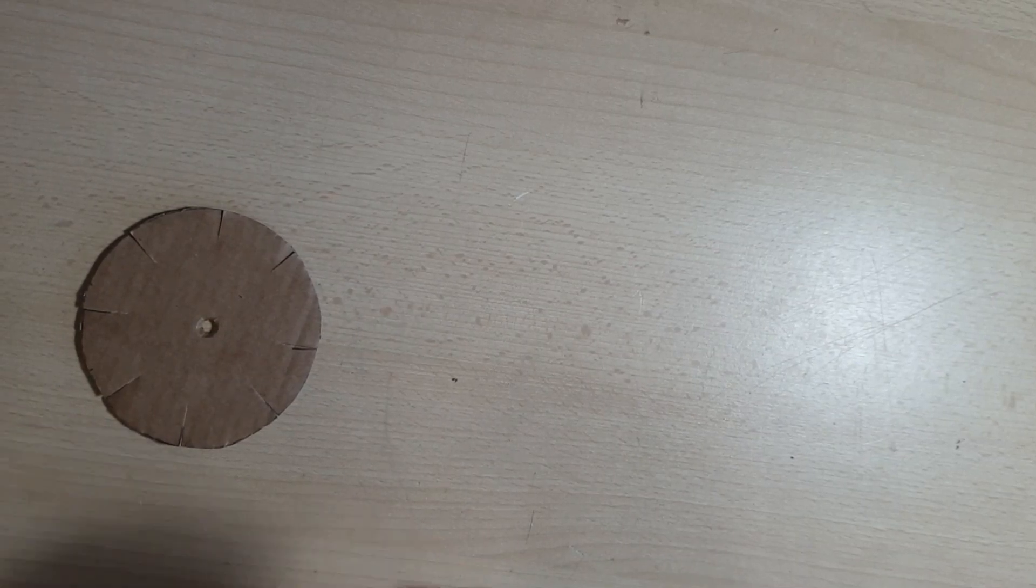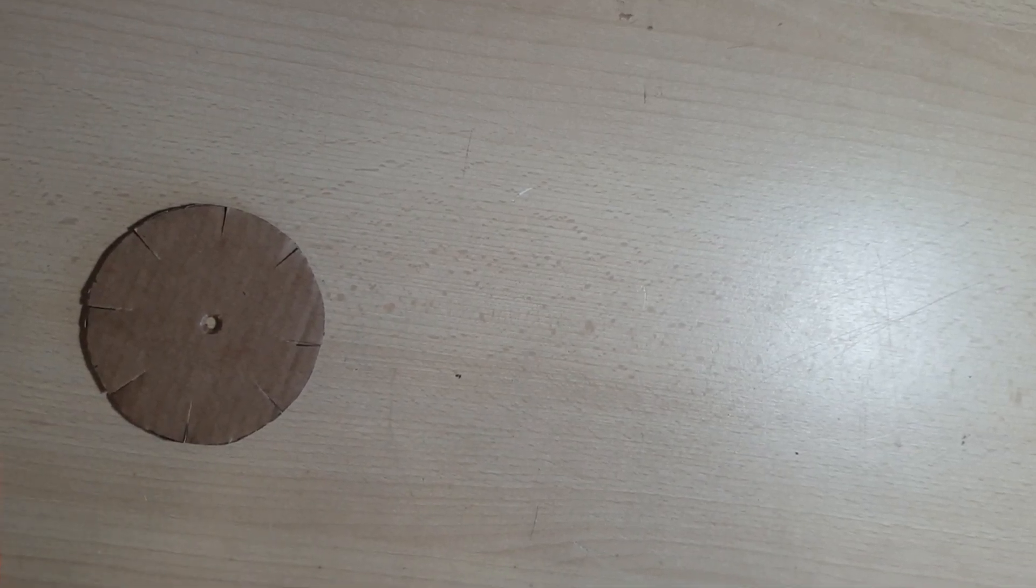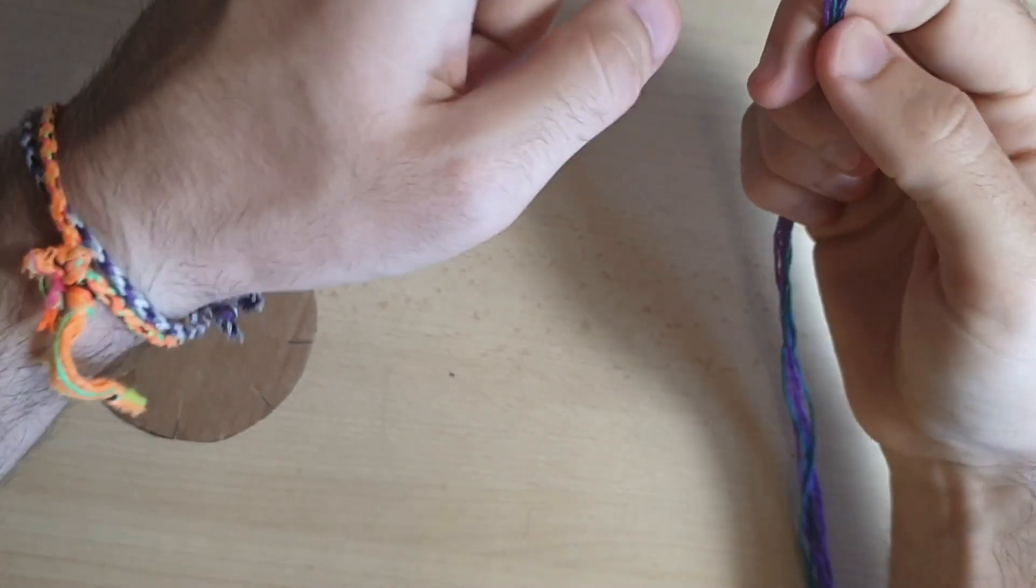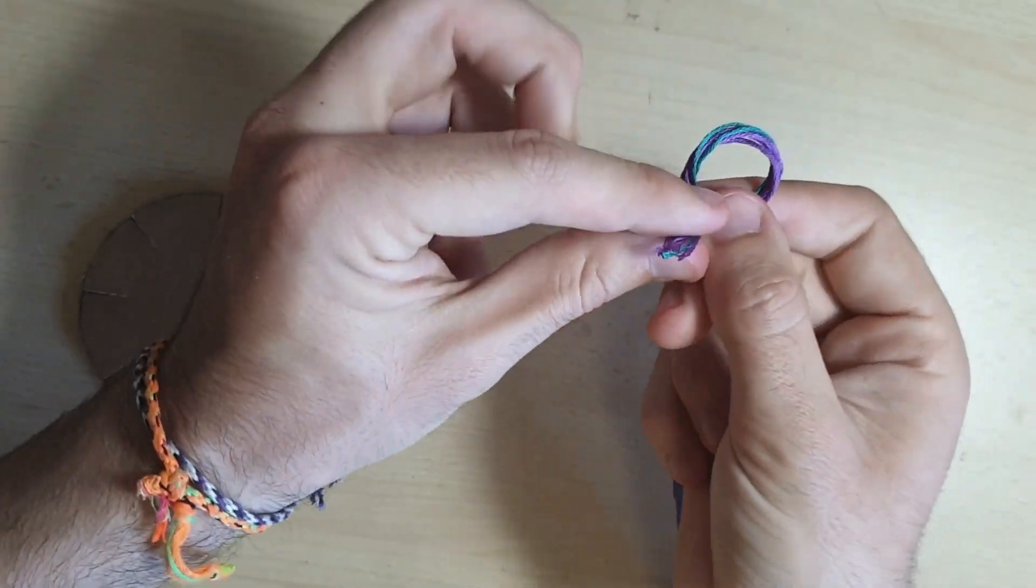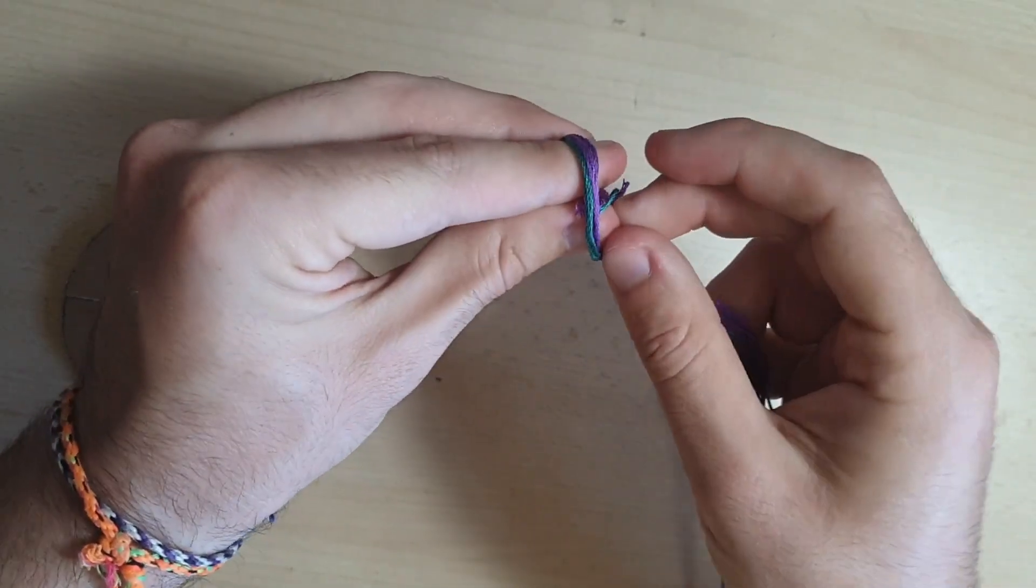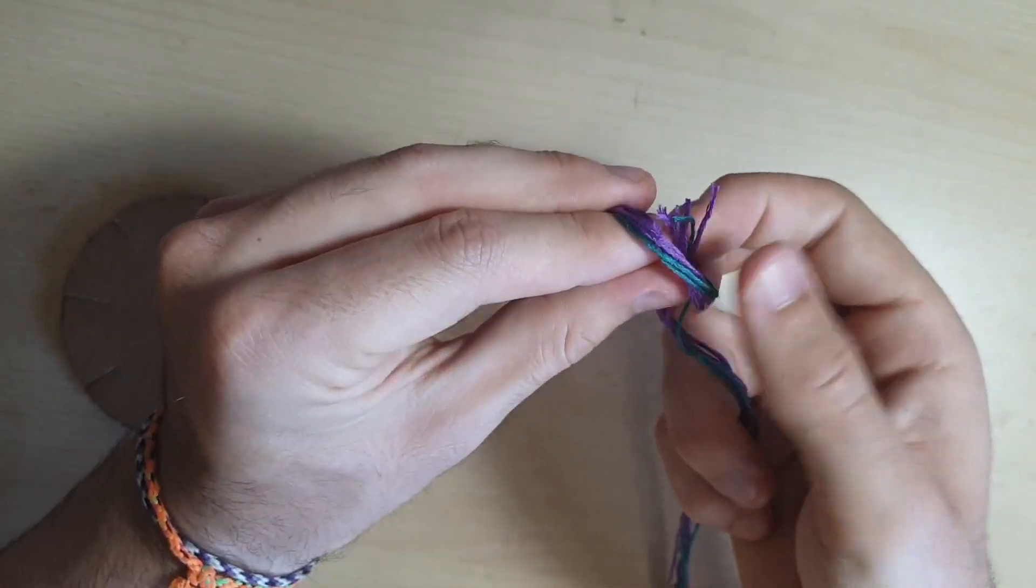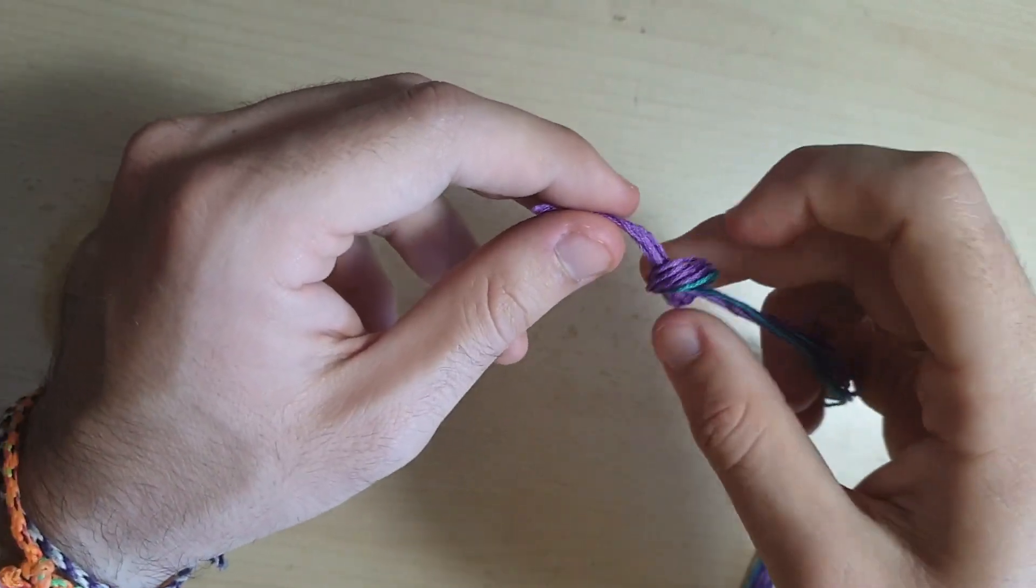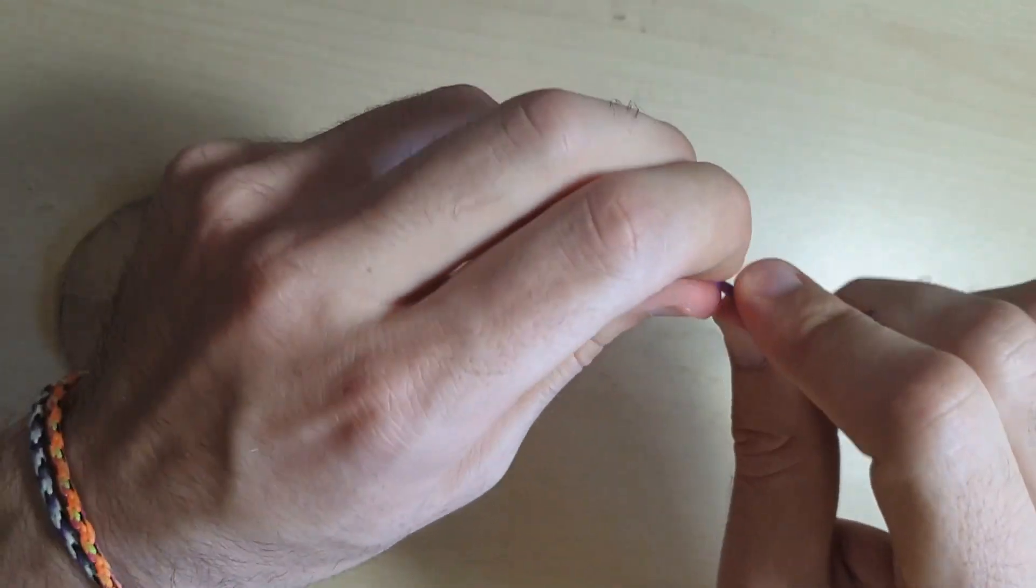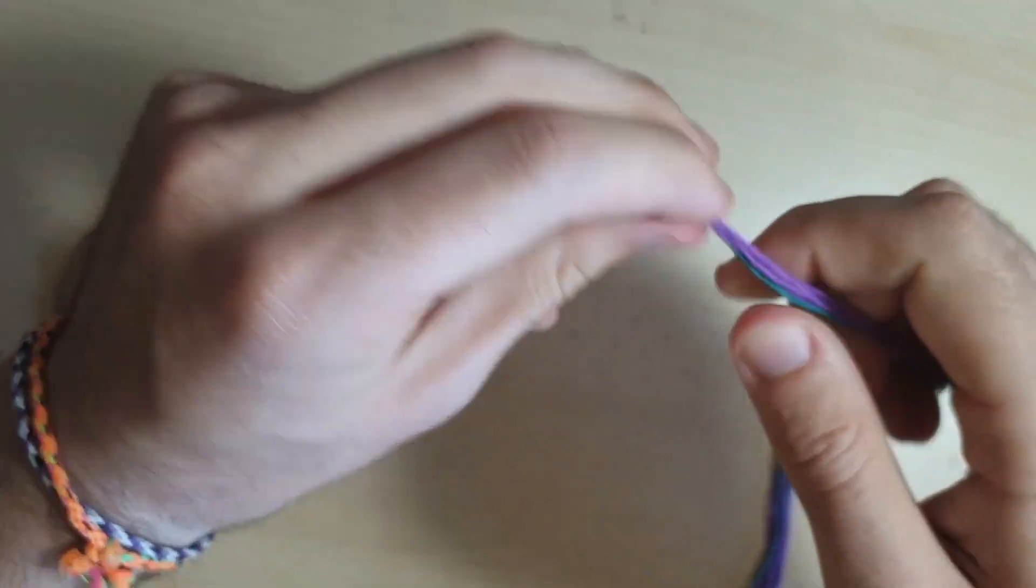Once you've cut out your strands, what you need to do is get them all together at one end, and then you make a loop and you do what's called an overhand knot. Thread the loop through, like this, and then pull it tight, trying to keep it near the end.